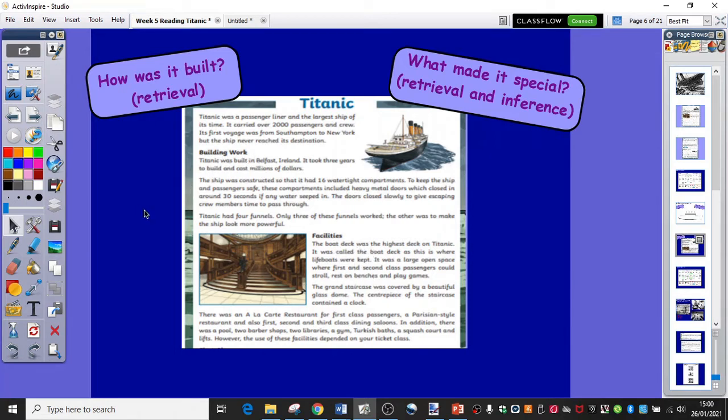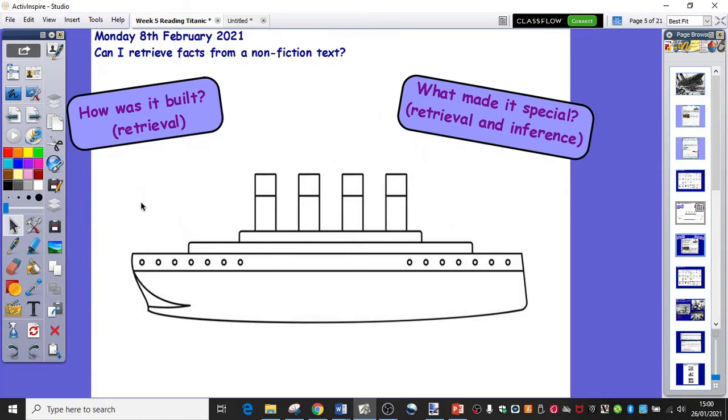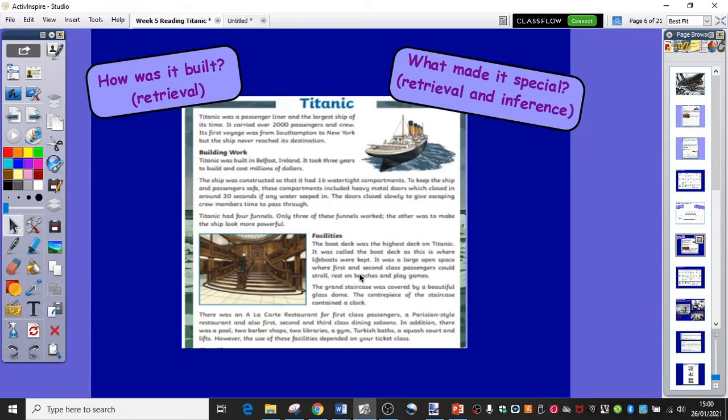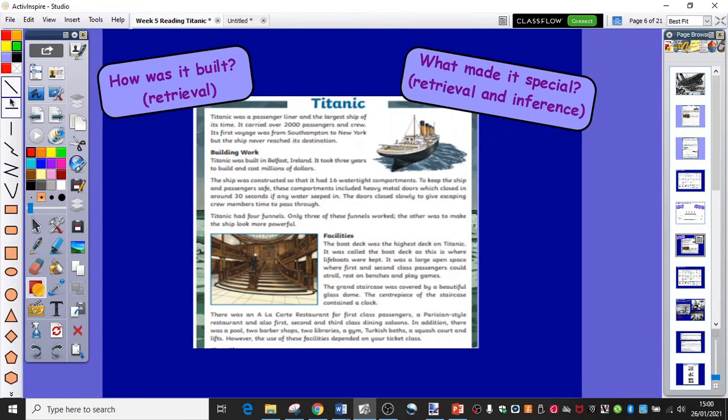And as we go through, because we know we are going to be labelling this diagram, I would like us to highlight information as we go. So I've got a green pen that I'm going to be underlining with. It's up to you how you wish to circle or highlight or underline today. Okay, so I'm just going to start with building work. The Titanic was built in Belfast, Ireland. It took three years to build and cost millions of dollars.